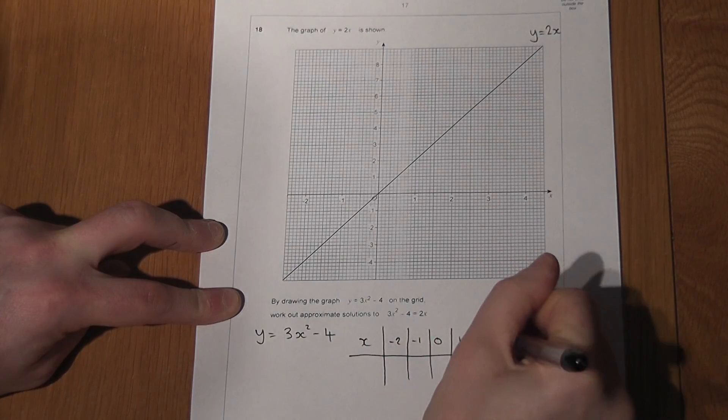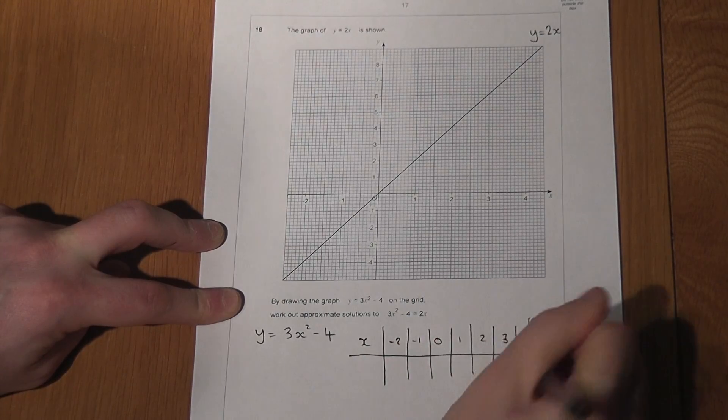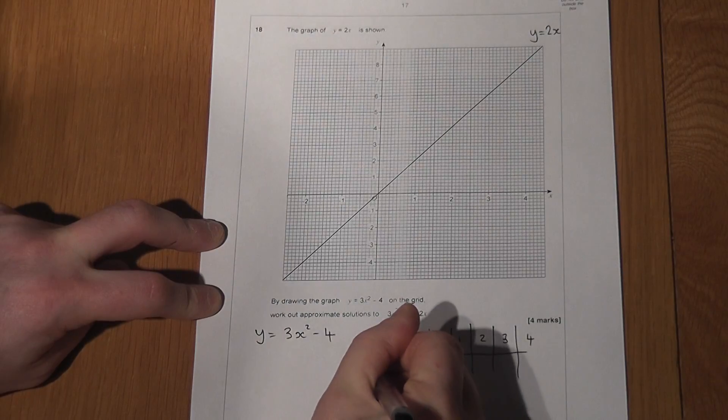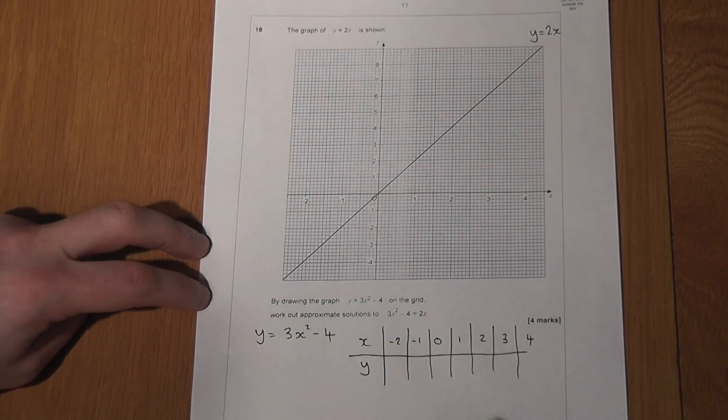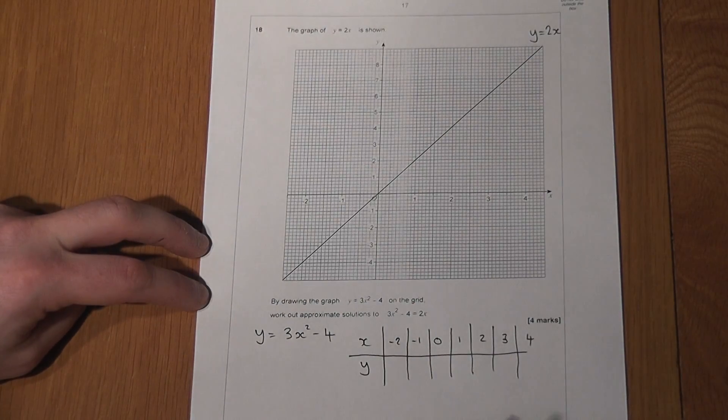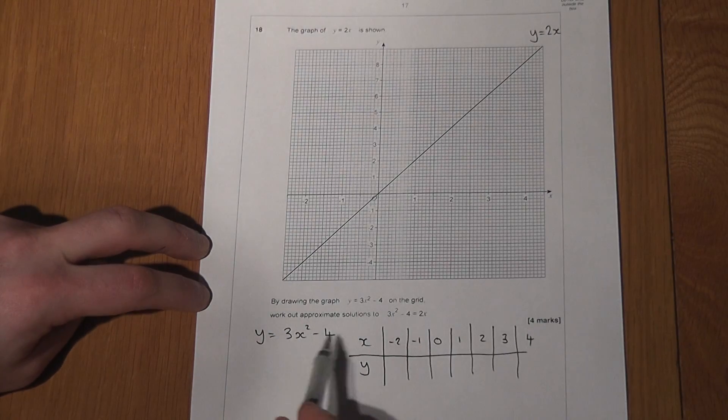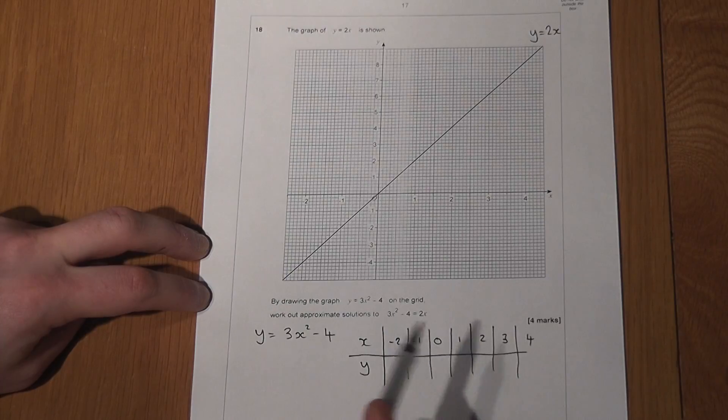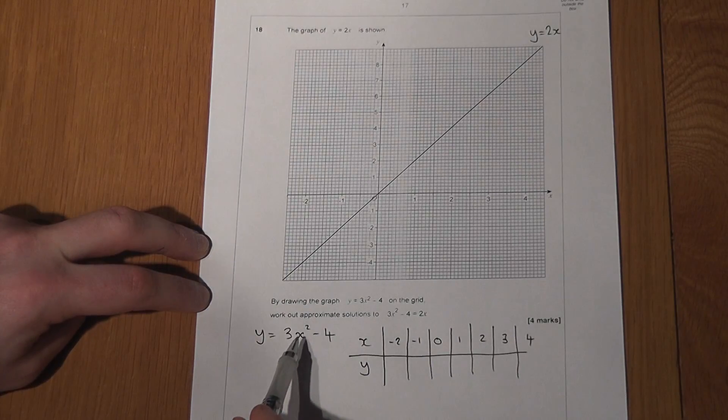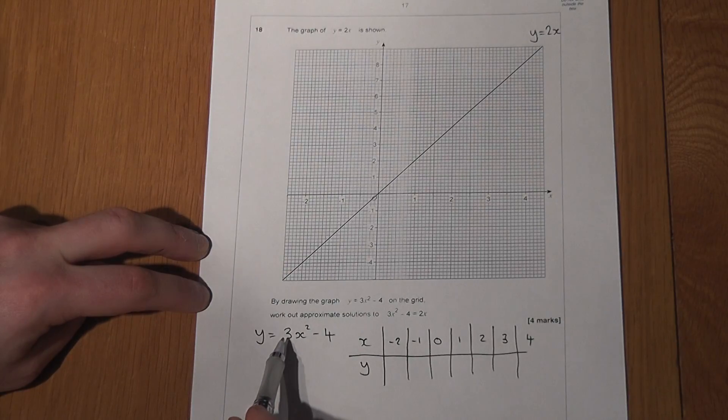And I'm going to use the given rule to find the y coordinates at each of these values. Now for this rule, 3x squared take away 4, we have to do the operations in a certain order. We always square first, then we times by 3, then we take away 4.